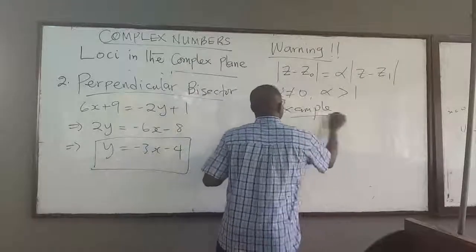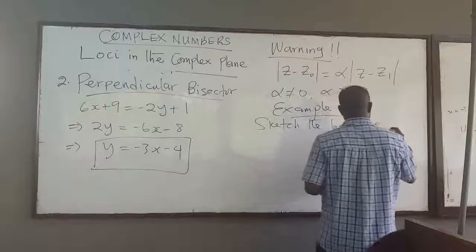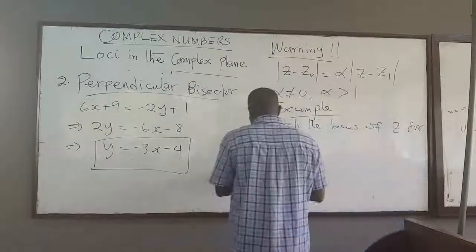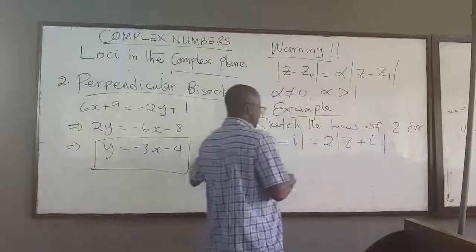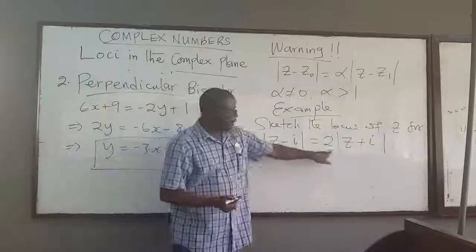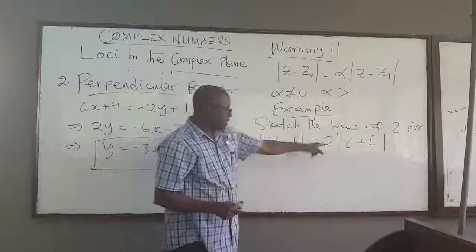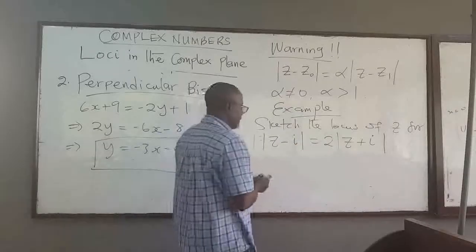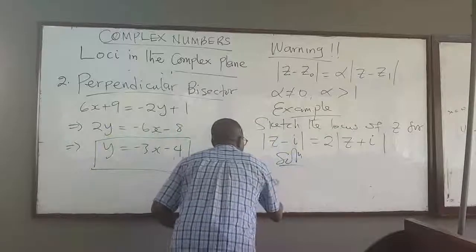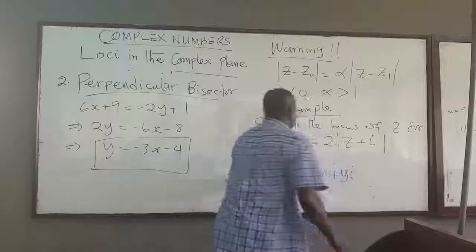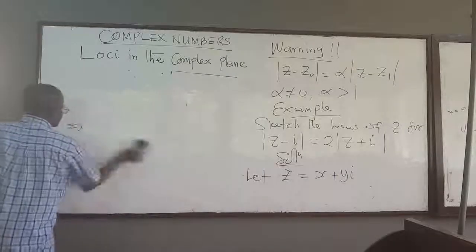An example is this: sketch the locus of z for |z − i| = 2|z + i|. If there was no 2 here — if this was 1 — then straight away we'd know we're going to have a perpendicular bisector. But since I have a 2 here, I cannot conclude that it's a perpendicular bisector. To sketch the locus of points, I need to find the Cartesian form. As usual, let z = x + yi and plug it into this equation and manipulate the resultant expressions.